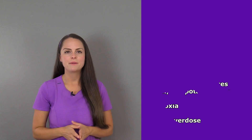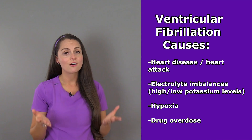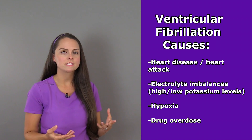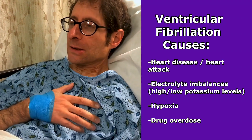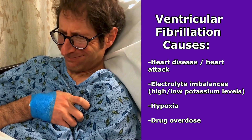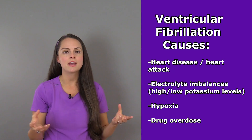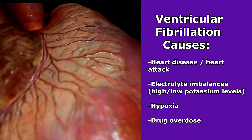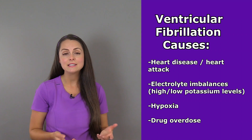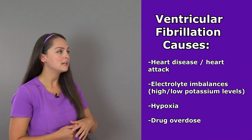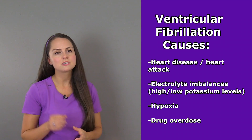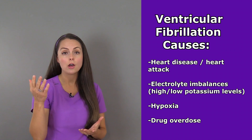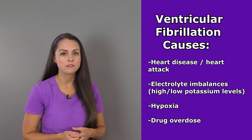Now, what can cause V-Fib? Anything that affects the heart, especially heart disease. So if the patient has severe heart disease — let's say they have a severe heart attack — this could cause V-Fib, because with a heart attack you can get ischemia that can damage the heart muscle so much that it causes it not to pump efficiently and can lead to this rhythm. Also, any type of electrolyte imbalances, especially ones that affect potassium levels — severely low or high potassium levels could cause V-Fib.